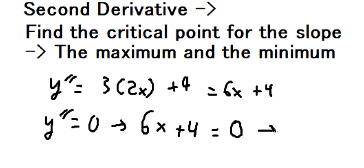We can find the value of x. We move 4 to the right and divide by 6, and we get x = -2/3. Now we put this value in.